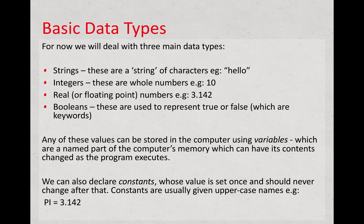These are all stored in the computer using variables, whereby we name a piece of memory in the computer and then store a value in that piece of memory. You can also have constants, whereby you name a piece of memory and store a value, but the idea is that value never changes. So a variable is one where you can change the contents, and a constant is one where you can't change the contents.